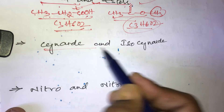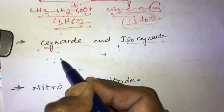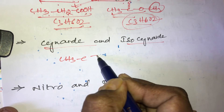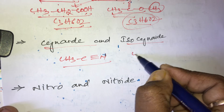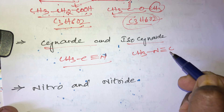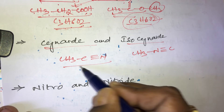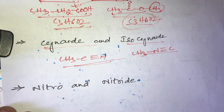Another example is cyanides and isocyanides. Cyanides and isocyanides also belong to functional isomers. For example, CH3CN is methyl cyanide and CH3NC is methyl isocyanide — both have the same molecular formula.